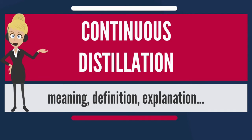In continuous distillation, each of the fraction streams is taken simultaneously throughout operation; therefore, a separate exit point is needed for each fraction. When there are multiple distillate fractions, the distillate exit points are located at different heights on a fractionating column. The bottoms fraction can be taken from the bottom of the distillation column or from a reboiler connected to the bottom of the column.